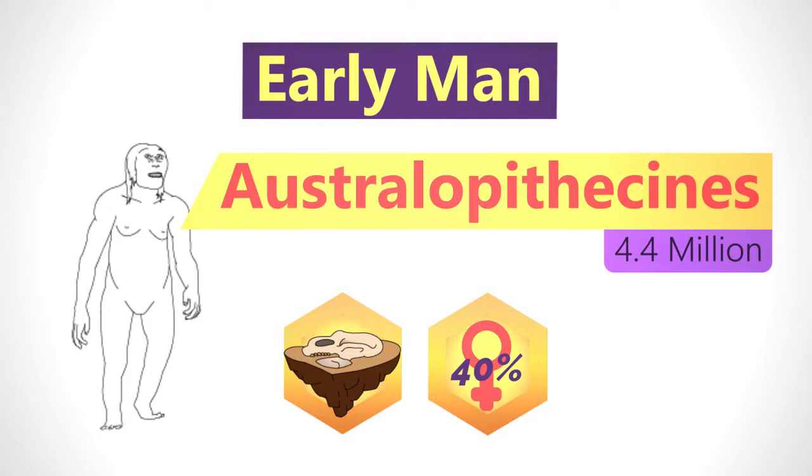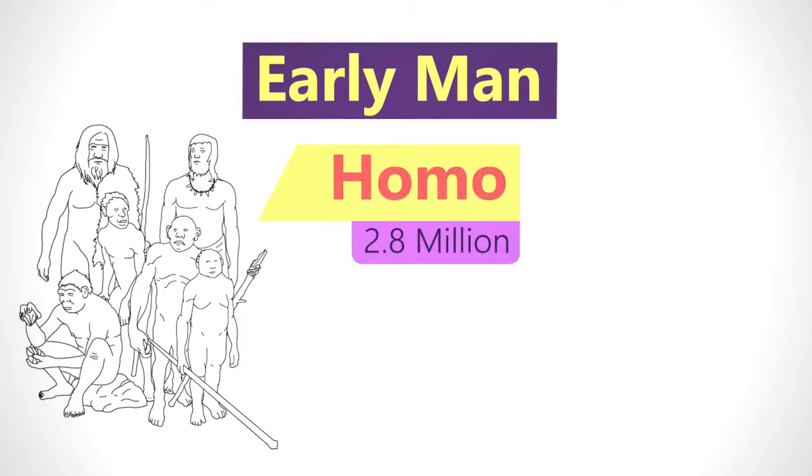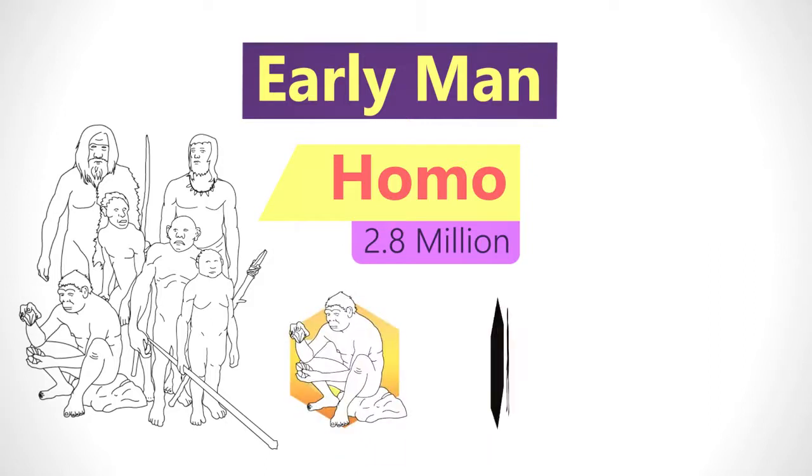Australopithecus evolved into the more familiar Homo genus, to which humans or Homo sapiens belong. The oldest fossil we have in the Homo genus is from 2.8 million years ago. Early Homo species, including Homo erectus and Homo habilis, walked on two legs, as did Lucy.